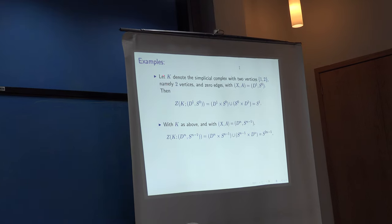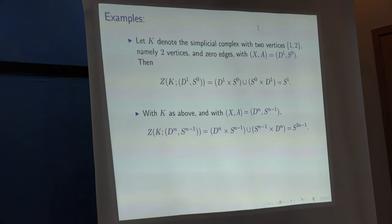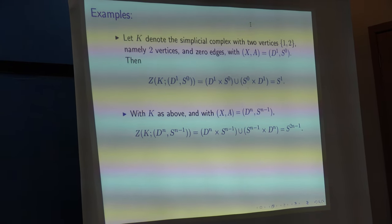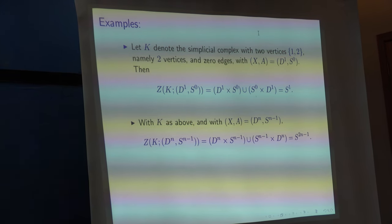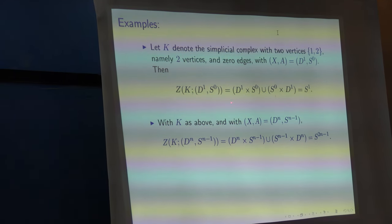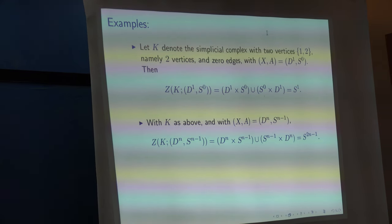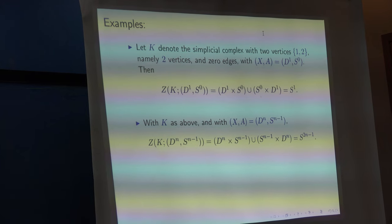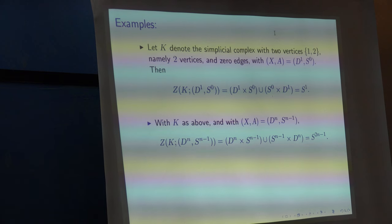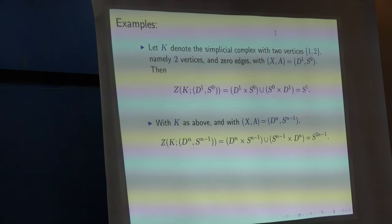So, here's an example. So, suppose K is a simplicial complex with two vertices and no edges, so it's just two points. You could ask what ZK of D1 and S naught is. So, as is written down, this is D1 cross S naught, union S naught cross D1, which is the boundary of the interval cross the interval or a circle. And so, you think, well, if you're a first year graduate student in mathematics, you probably know this inside and out. You could ask, why is it possibly interesting? Well, a similar construction works where the pair XA is the N-disc modulo its boundary, and in that case, this space, this polyhedral product, is the 2N minus 1 sphere.